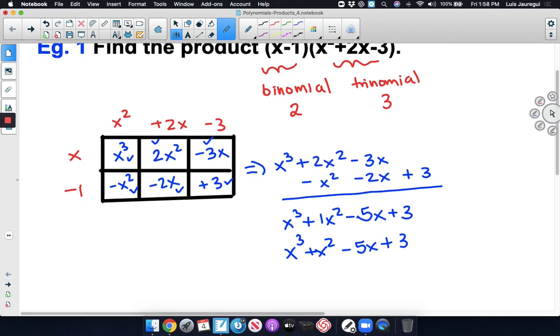So we can conclude this by saying the following: therefore, the product of the quantities x minus 1 and x squared plus 2x minus 3 is equal to x cubed plus x squared minus 5x plus 3.